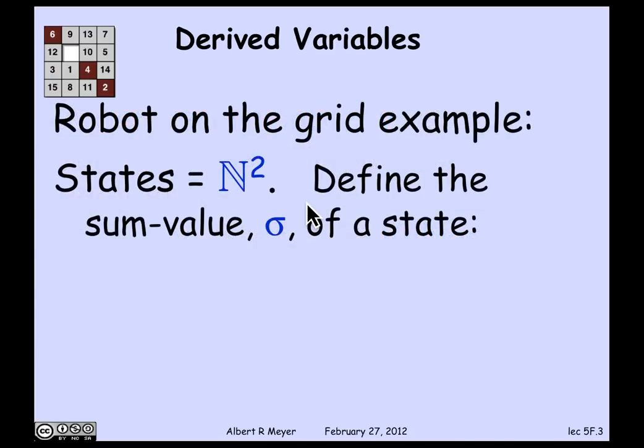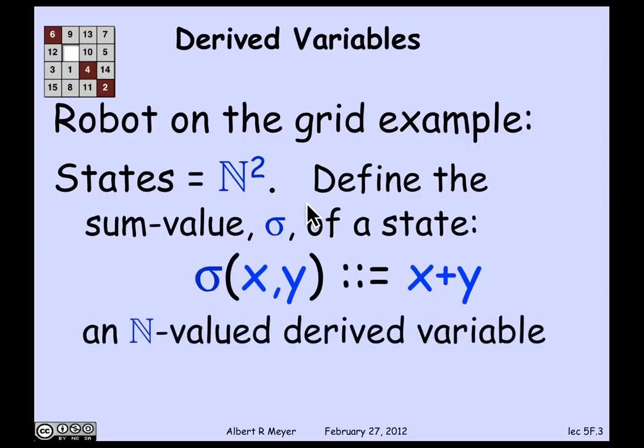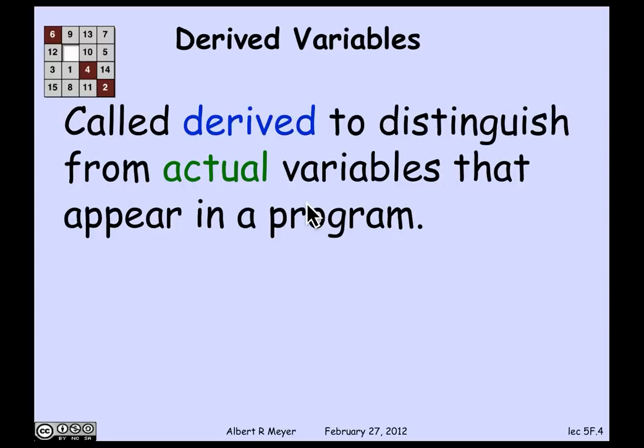Let's look at the example of the robot on the grid. The states were pairs of non-negative integers, giving the coordinates of where the robot was. One of the derived variables that we found really useful was the sum value, sigma, of a state, which is defined to be x plus y. This would be a non-negative integer valued derived variable.